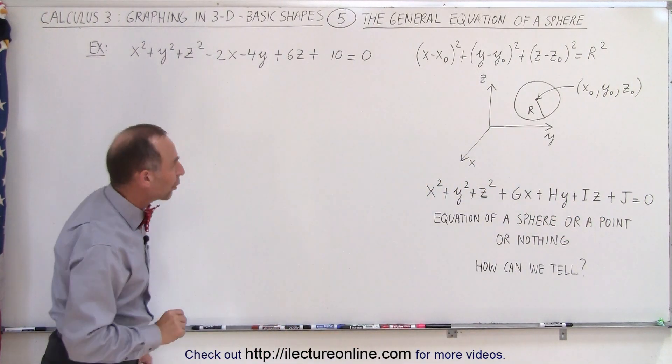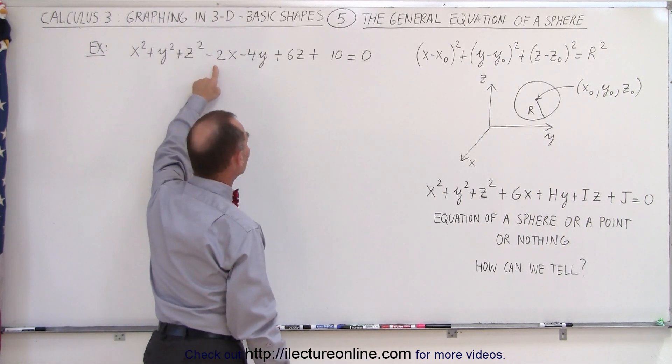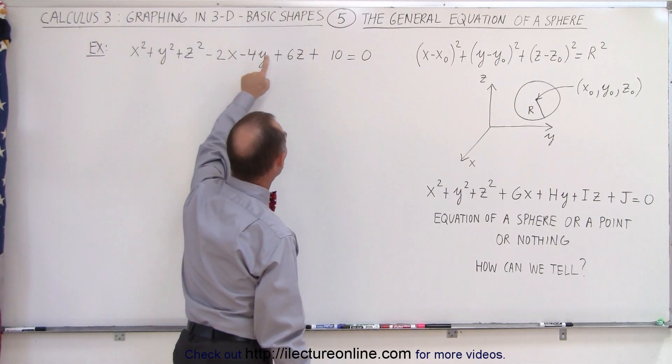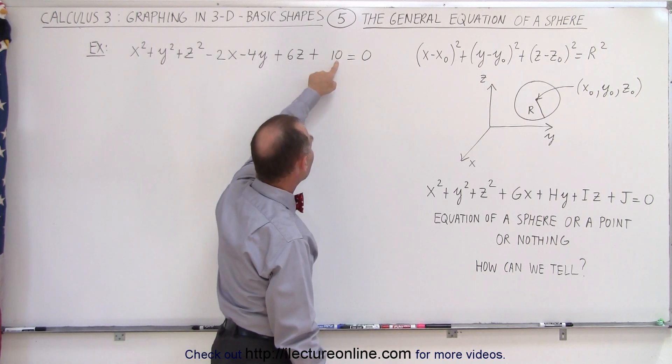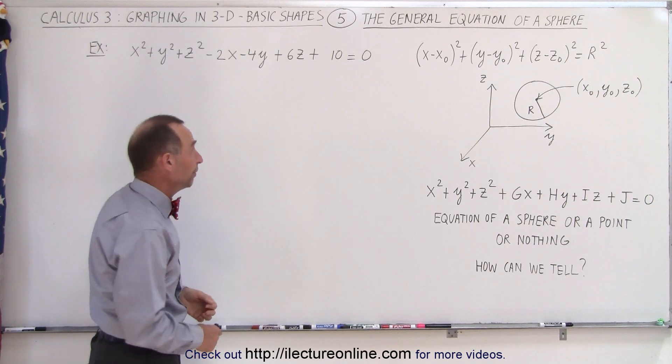So this is how that works. Here we have an equation that's in the exact same format. Minus two is the value for g, h is minus four, i is six, and j is ten. So let's see if that's the equation of a sphere.